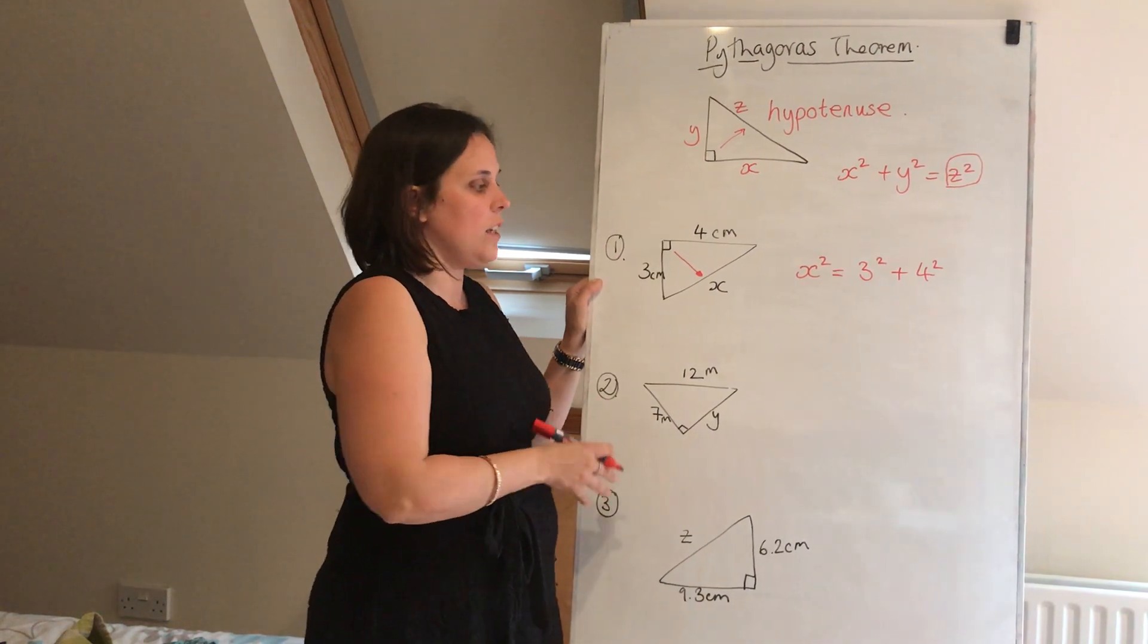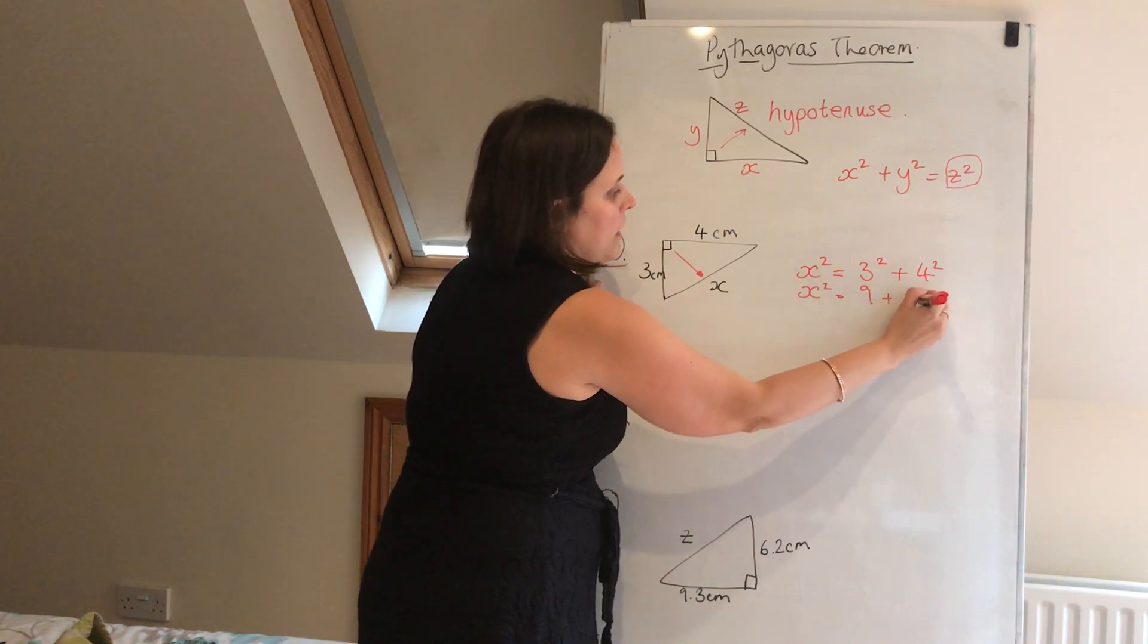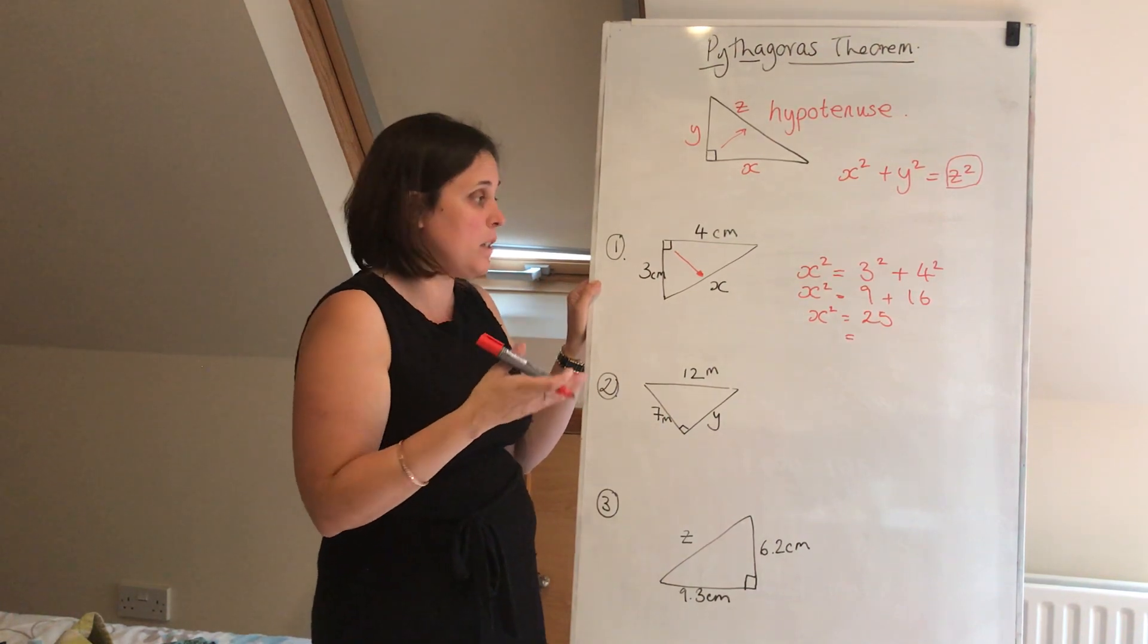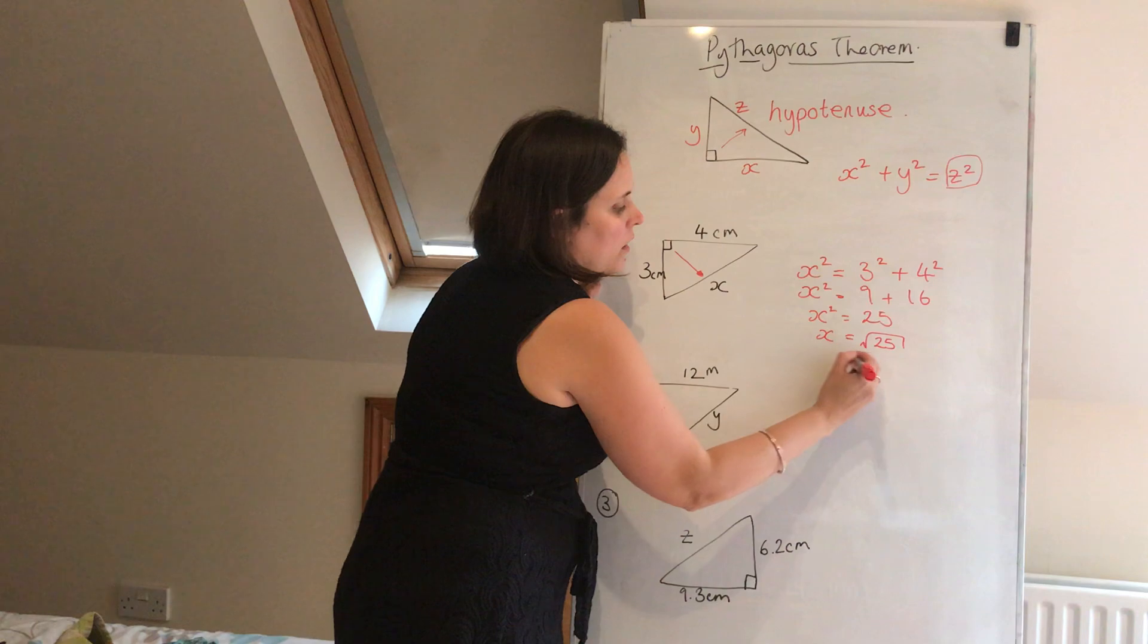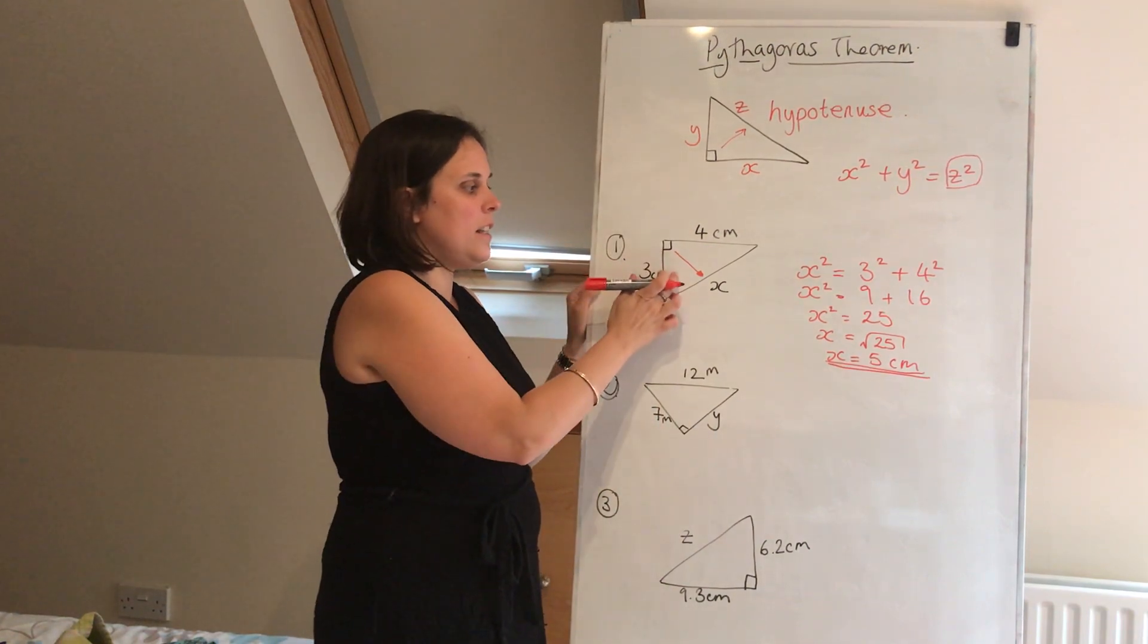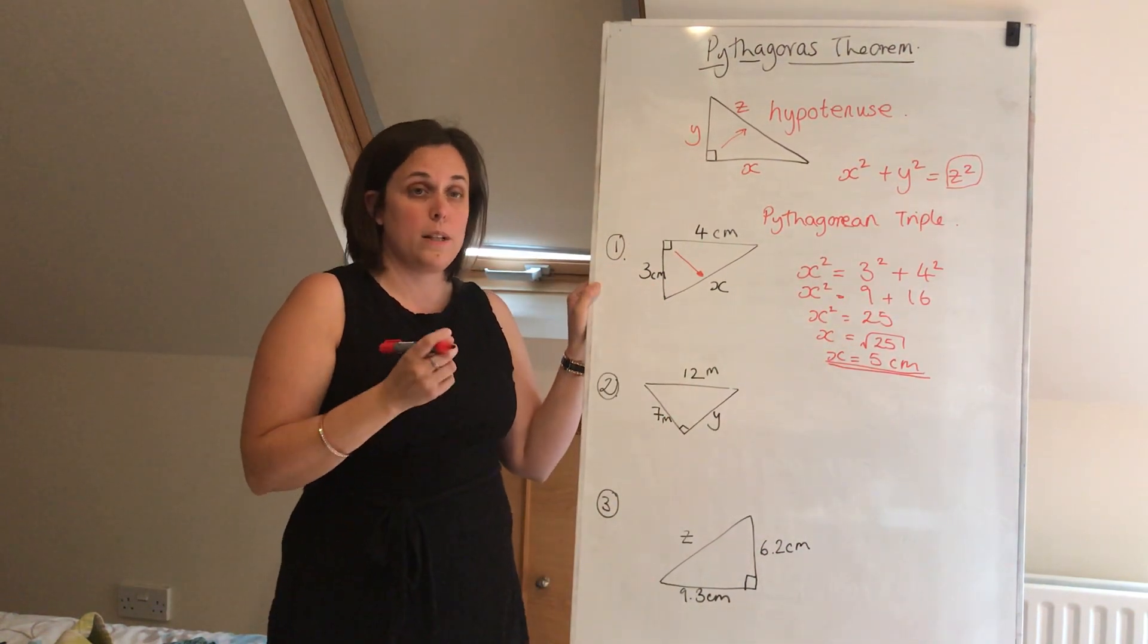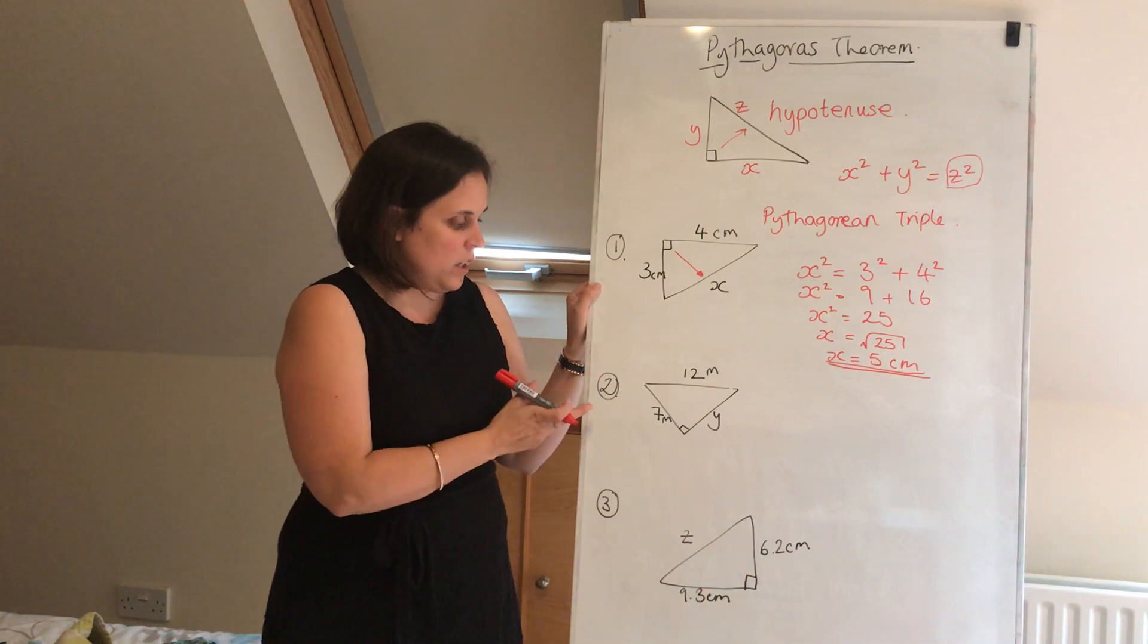Once you've got that set up, the rest of it is quite nice and straightforward. So x squared is equal to three squared is nine, four squared is 16. Nine plus 16 is 25. So x squared is equal to 25. Now, how do I go from x squared to x? Because I don't want to know what x squared is, I want to know x. And the answer is, you square root. The square root of 25 happens to be a nice number, and we get the answer five. Now this is actually a special triangle and it's called a Pythagorean triple, where all three sides of this triangle are integers.